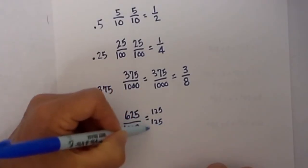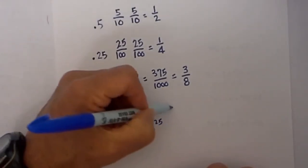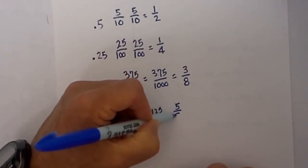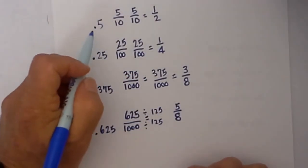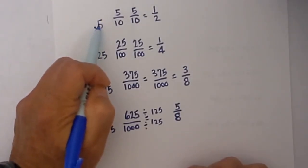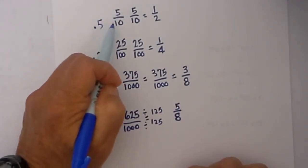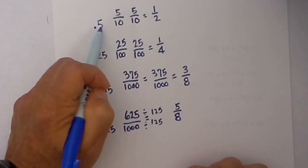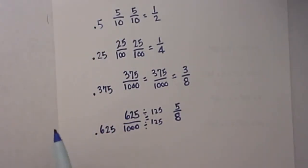So again, converting a decimal to a fraction: create a fraction, place the number to the right as the numerator, and in your last place value write a one and add the number of zeros to the right of the decimal. Hope that helps with converting decimals to fractions.